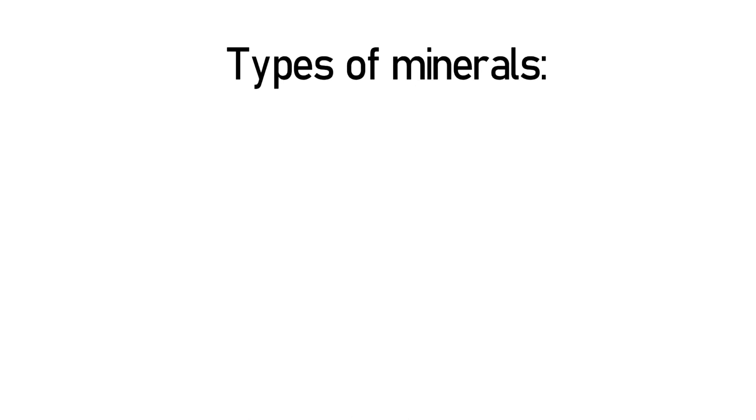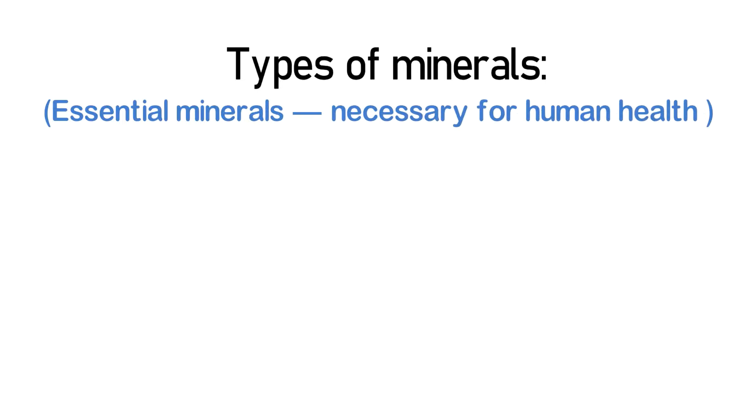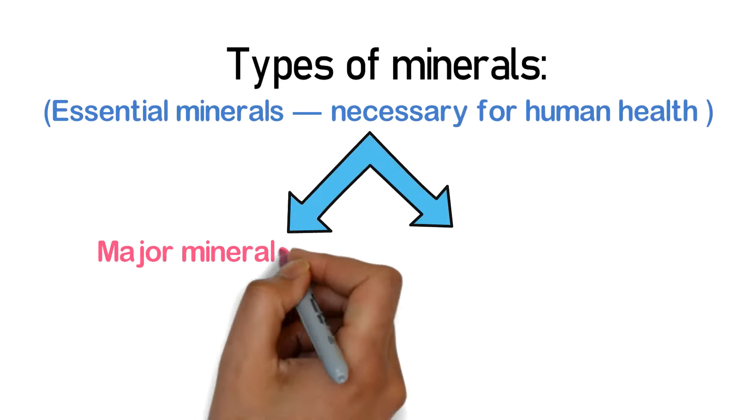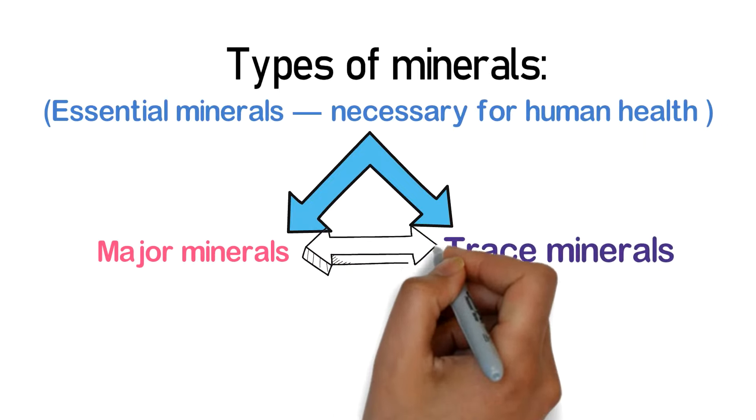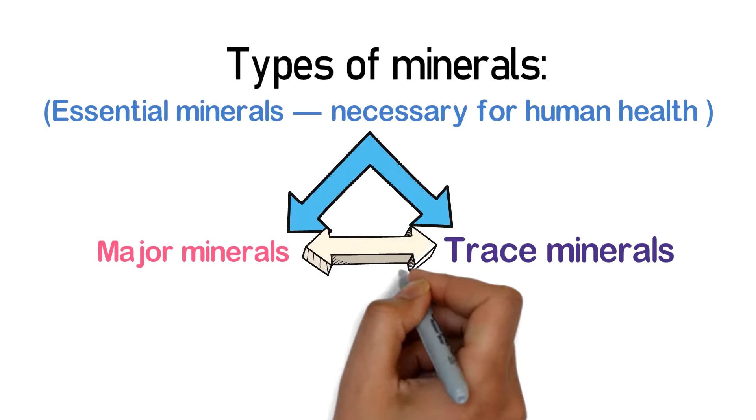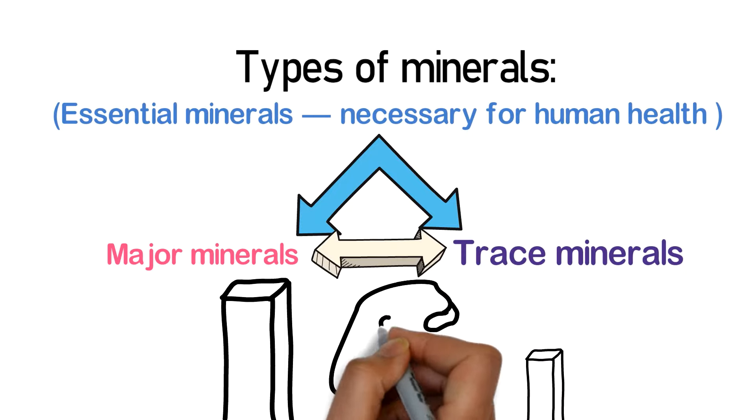Types of minerals: Essential minerals necessary for human health are classified into major minerals and trace minerals. These two groups of minerals are equally important, but trace minerals are needed in smaller amounts than major minerals. The amounts needed in the body are not an indication of their importance.